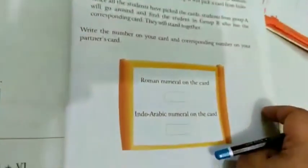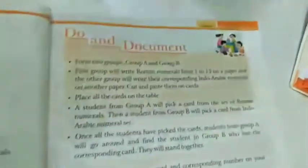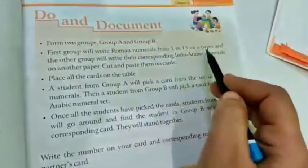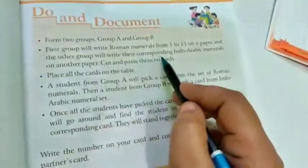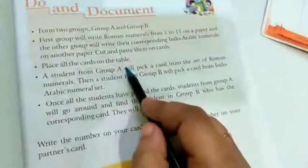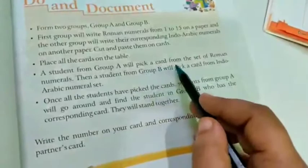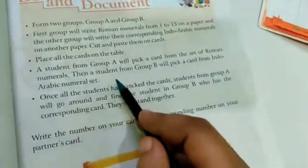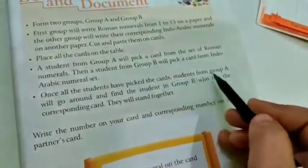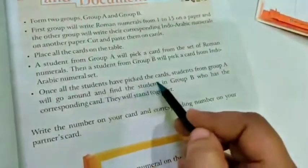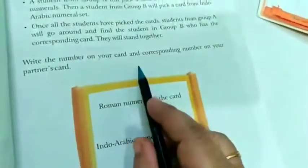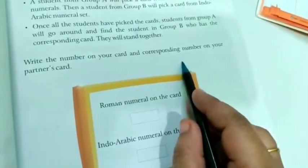So let's see the do and document form. Two groups, group A and B. First group will write Roman numerals from 1 to 15 on a paper and the other group will write their corresponding Indo-Arabic numerals on another paper. Cut and paste them on card, place all the cards on the table. A student from group A will pick a card from the set of Roman numerals. Then a student from group B will pick a card from Indo-Arabic numerals set. Once all the students have picked the card, students from A group will go around and find the student in group B who has the corresponding card. They will stand together.